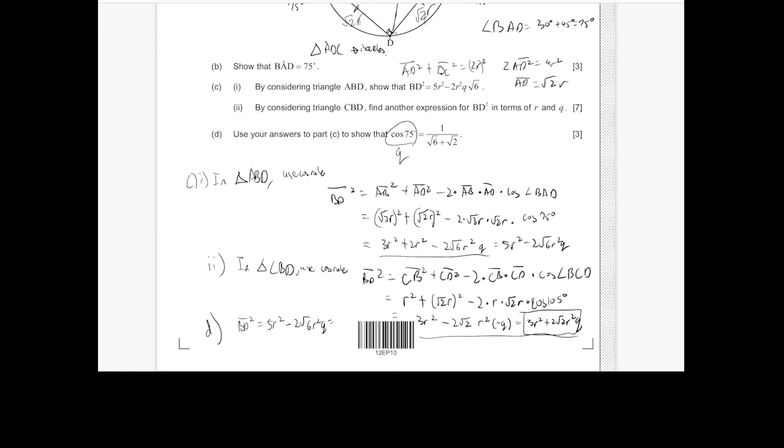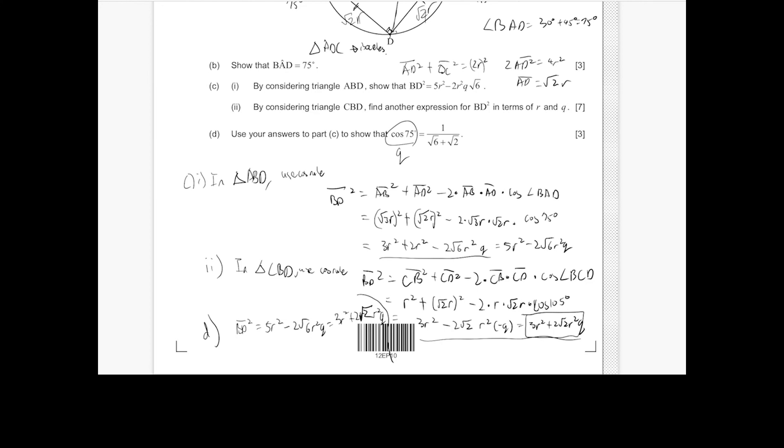So this is 5R squared minus 2 root 6R squared Q, which equals 3R squared plus 2 root 2R squared Q. So that means 2R squared equals 2 root 2 plus 2 root 6R squared Q.